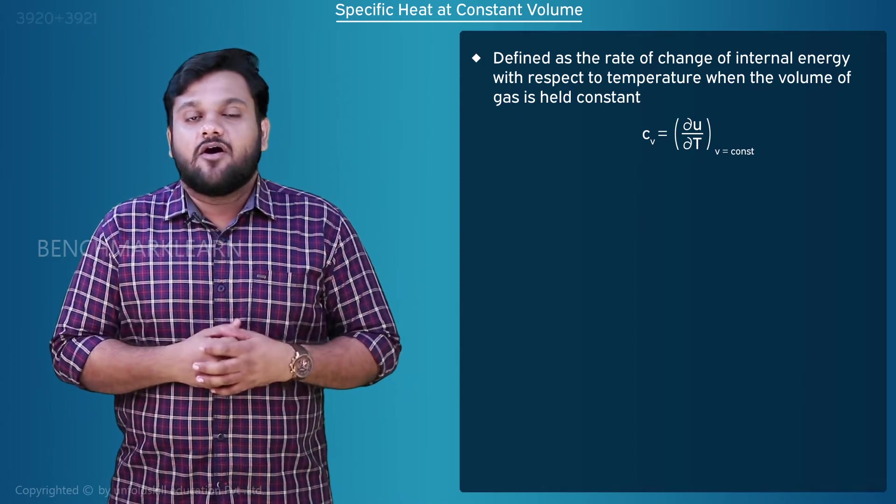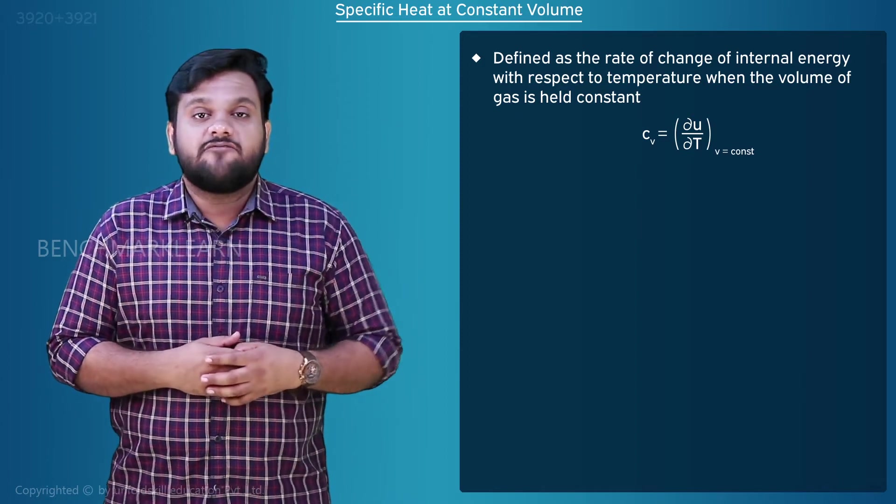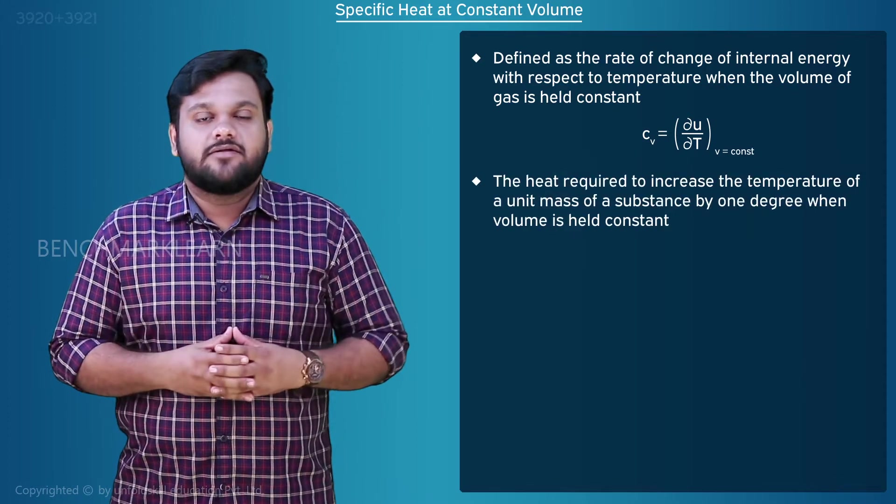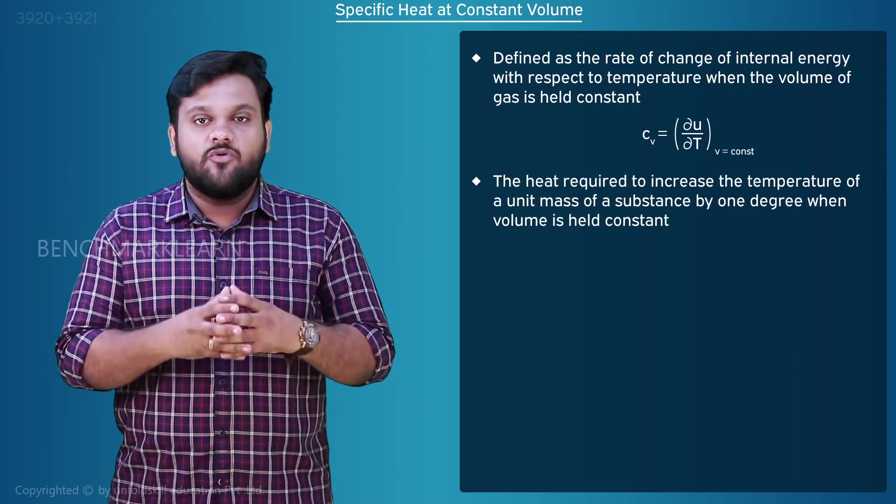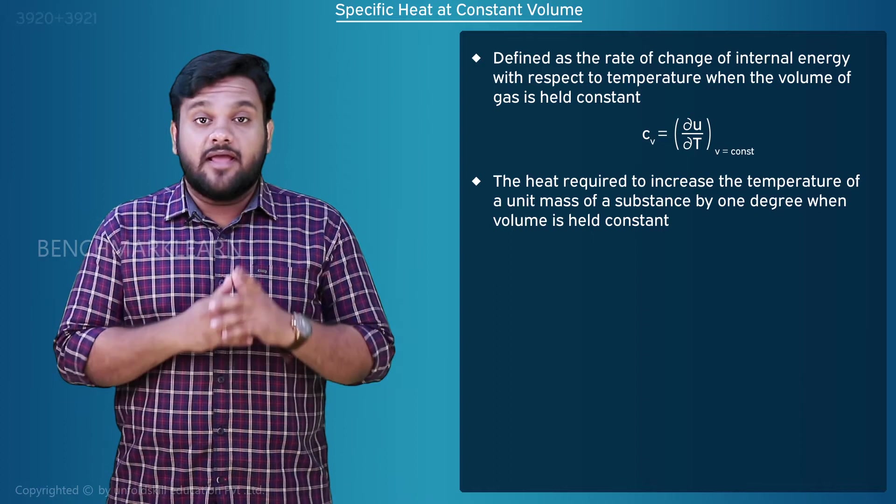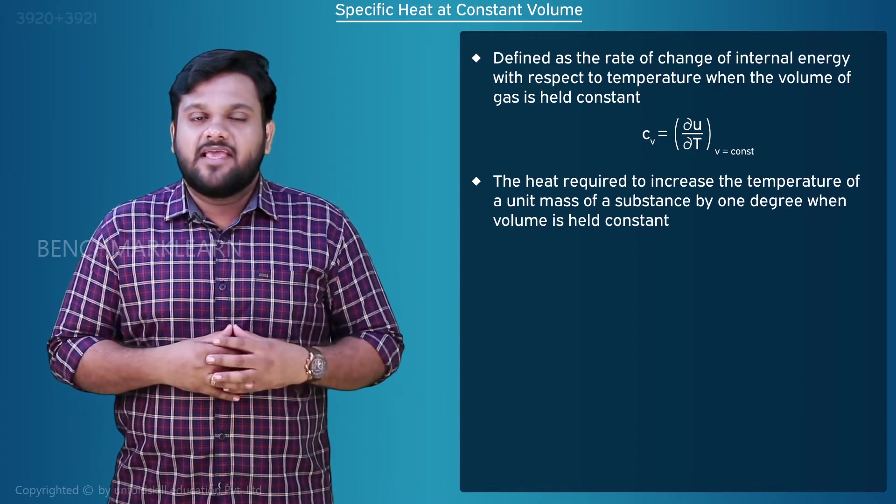The physical meaning of the specific heat at constant volume is that it is the heat required to increase the temperature of a unit mass of a substance by one degree when volume is held constant.